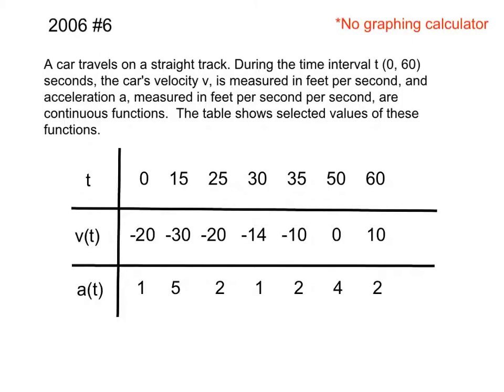A car travels on a straight track. During the time interval t from 0 to 60 seconds, the car's velocity v, measured in feet per second, and acceleration a, measured in feet per second per second, are continuous functions. The table shows selected values of these functions.